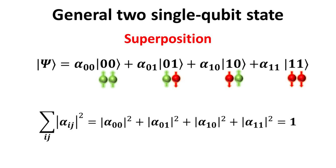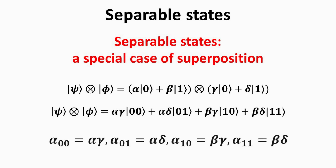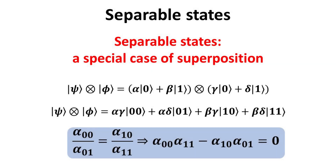Thus far, we have shown that the tensor product of two-qubit states can be expressed in terms of these four basis vectors. However, not any general state expressed in these four bases can be written as a tensor product of two single-qubit states. When the composite state function can indeed be written as a tensor product of single-qubit states psi and phi kets, we say the composite state is separable. One can show that the alpha amplitudes must satisfy the following condition to be separable: alpha_00 times alpha_11 minus alpha_10 times alpha_01 equals zero.